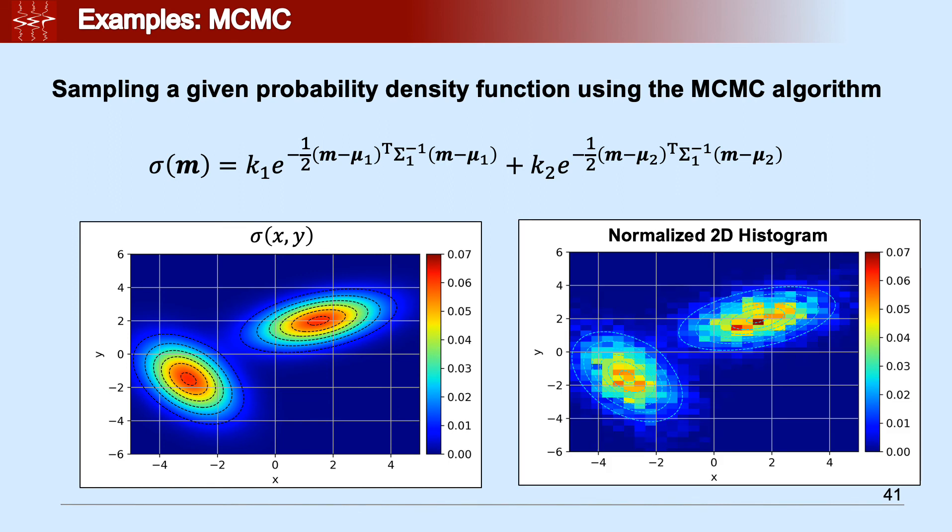And if we compute a 2D histogram, normalized histogram, of the extracted samples, we can see that the histogram follows pretty well the probability density function that we gave ourselves. Meaning the MCMC seems to be able to extract samples that are following the probability density function that we are trying to sample.